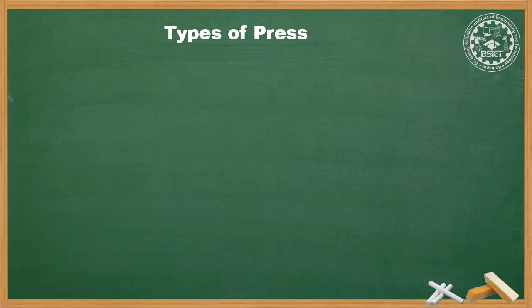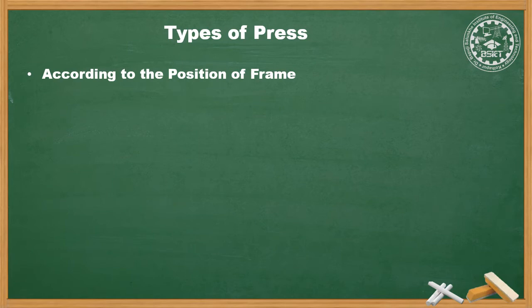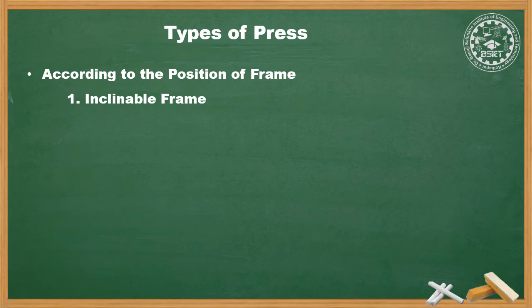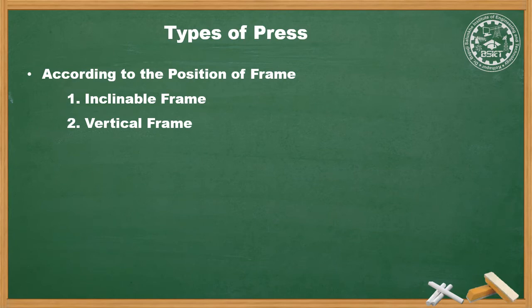Next, presses can be classified according to the position of frame. The first one is inclinable frame, in which the frame is inclined to an angle up to 20 degrees and it ranges from 1 ton to 150 tons. Second is vertical frame, also called straight side frame, used for high tonnage capacity. Third is horizontal frame, which is used less and for small capacity of work.